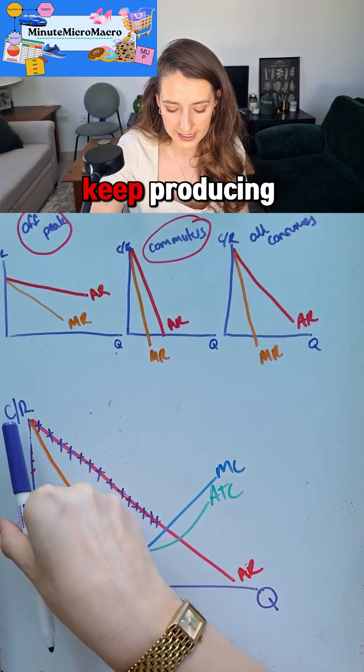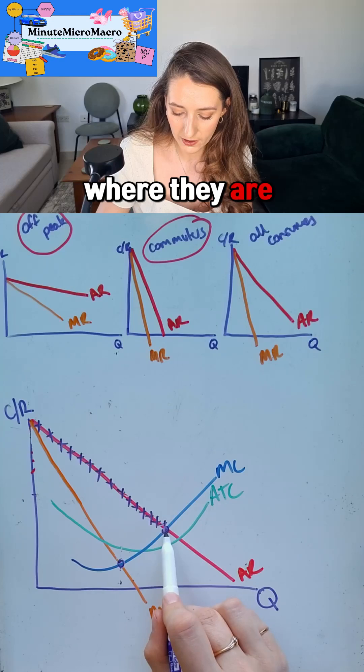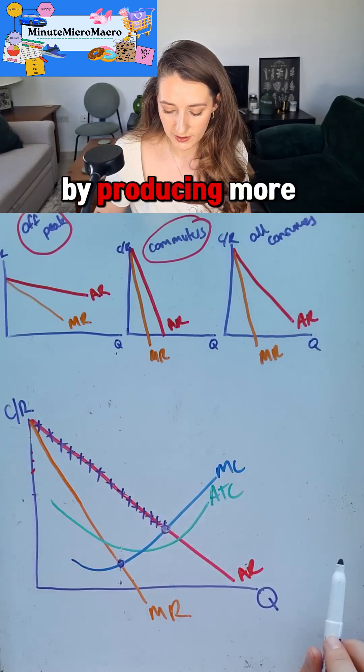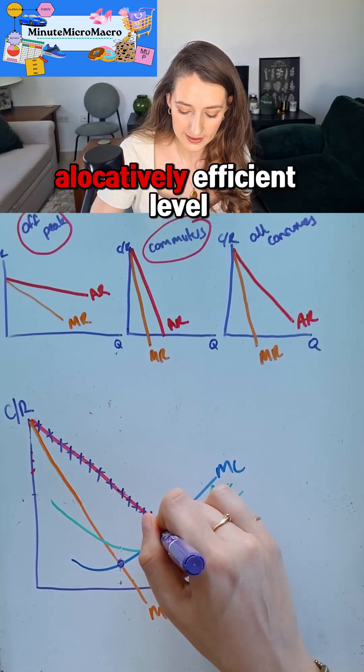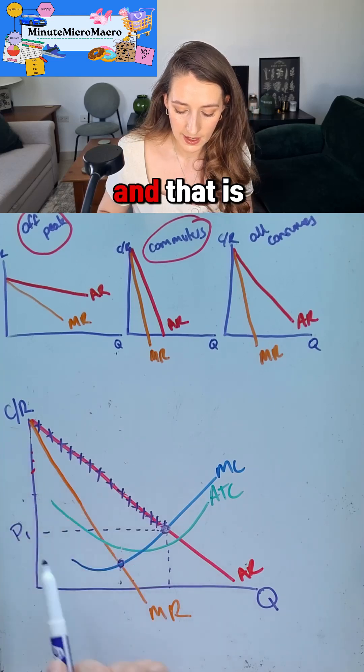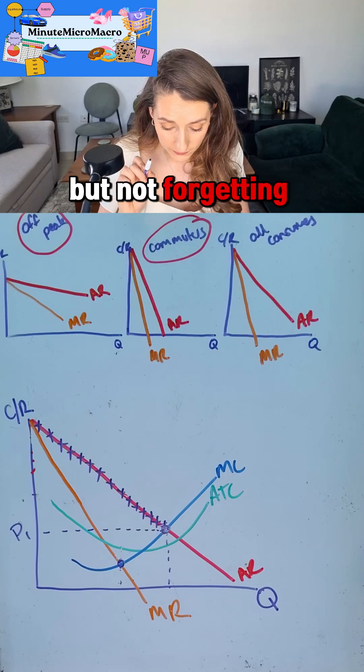They're going to keep producing all the way up until the point where they are no longer making any more money by producing more. They're going to produce at the allocatively efficient level where P is equal to MC, and that is the lowest price they will charge anyone, but not forgetting that they charge every single person the maximum amount.